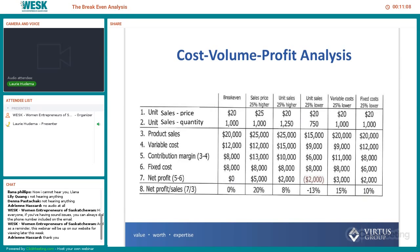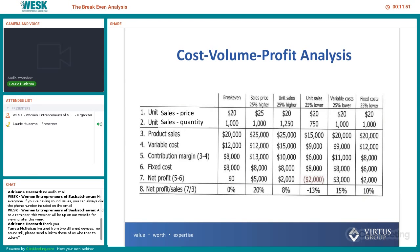What if we go back to our break-even and increase the number of units we sell? In that case, we've got $25,000 of sales because we're selling more units at the same $20 price. Our variable costs now go up because we're producing more units. So we have a contribution margin of $10,000 less our fixed costs, which equals $2,000 net profit. How about if unit sales go 25% lower than our break-even point? Now we're going to lose money — about $2,000. So maybe some months you'll lose, but overall you'll be profitable. So you still go ahead with the business venture.